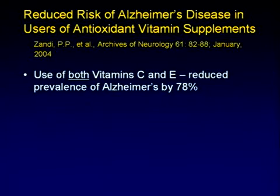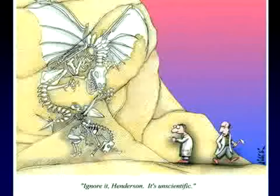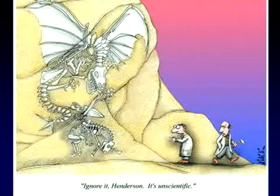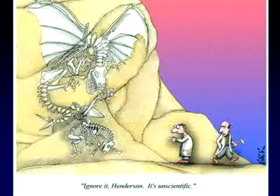I could be making this up — but just read the journals. If you read the journals, this is what they're actually saying. To my colleagues, that's invisible. And this is also invisible: that you can reduce the risk of Alzheimer's by 78% by giving antioxidants, based upon the understanding that Alzheimer's is essentially a mitochondropathy. But it's all — ignore it. It's unscientific.